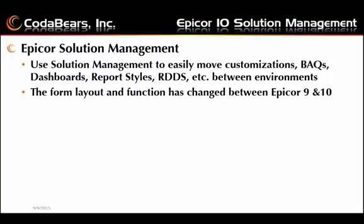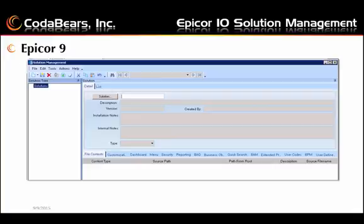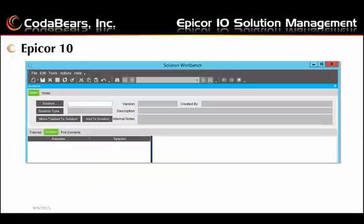One thing to note is that the Form, Layout, and Function has changed between Epicor 9 and 10. In Epicor 9, across the bottom are all these tabs — File Contents, Customization, Dashboards, Menu, Security — and that's how you would select the items you want in your solution. Epicor 10 looks a little bit different; those tabs are gone and now we have to add items to the solution differently.